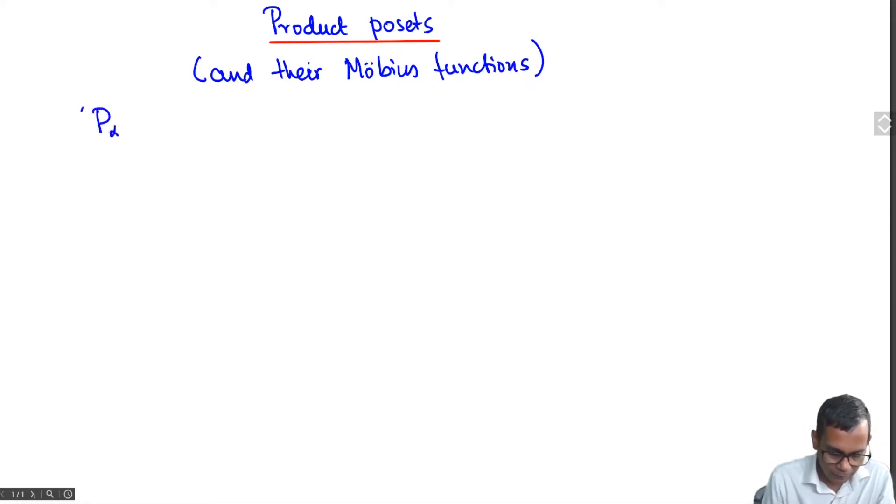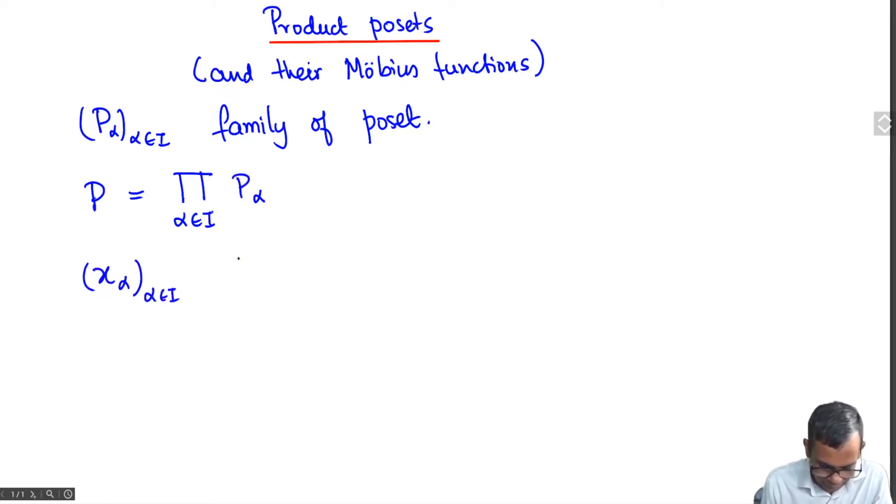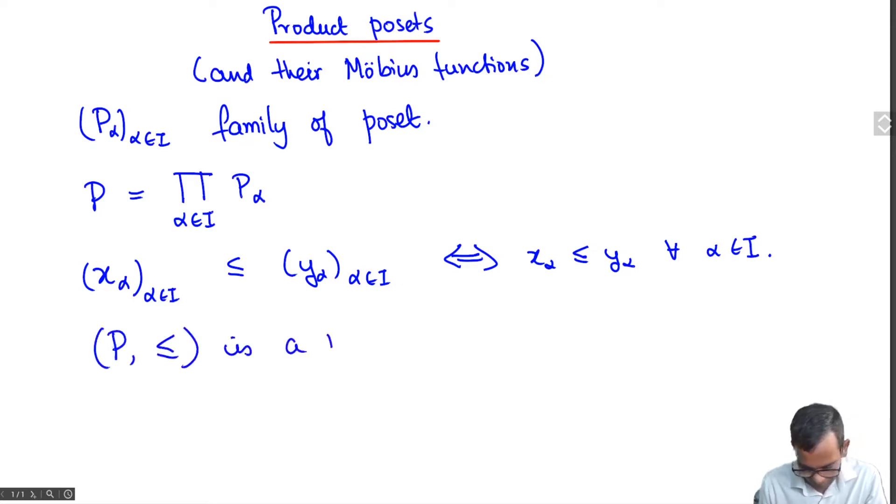Suppose you have P_α, a family of partially ordered sets indexed by α in an index set I. The product poset is the poset on the Cartesian product with the relation (x_α)_{α∈I} ≤ (y_α)_{α∈I} if and only if x_α ≤ y_α for all α in I. This becomes a partial order set and it's called the product of the posets P_α.